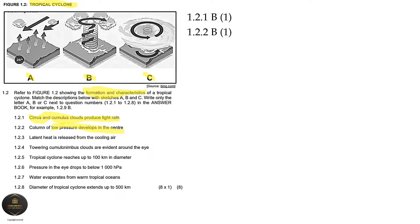Question 1.2.3: Latent heat is released from cooling air - that is A. Remember in our formation stage we have temperatures increasing to 26 degrees Celsius and above, with upper air convection happening as this air rises over the ocean, and latent heat is released as a result. Question 1.2.4: Towering cumulonimbus clouds are evident around the eye - that is C. C is showing us the mature stage; around the eye wall we will have cumulonimbus clouds forming due to rapid evaporation.